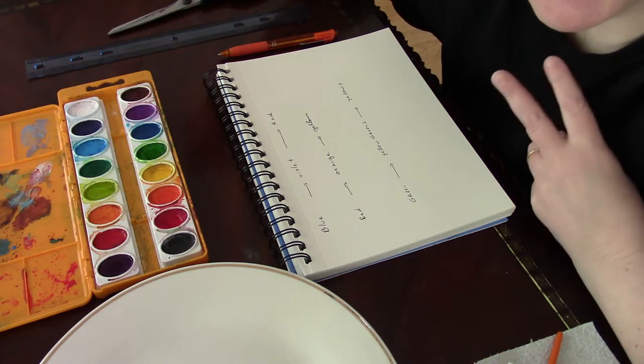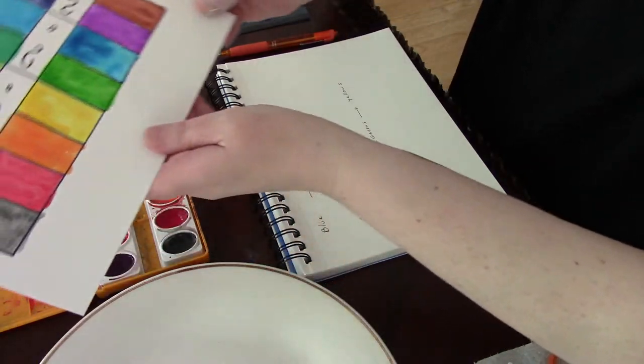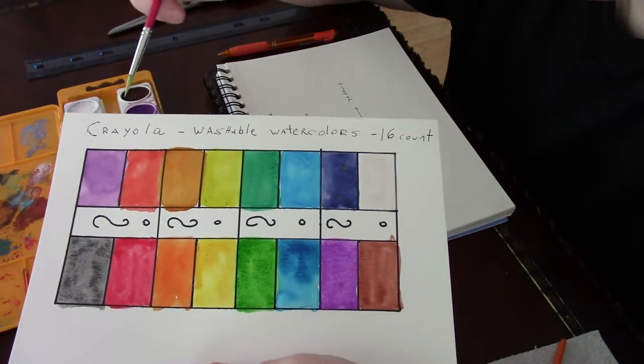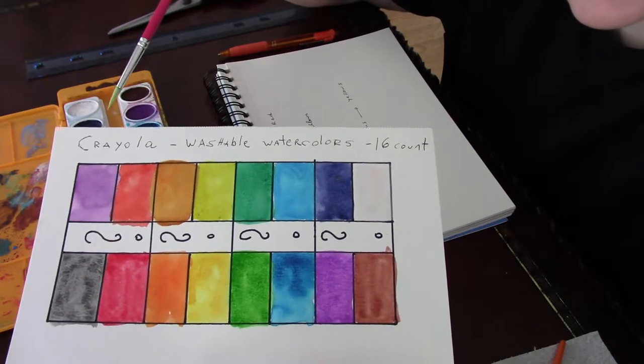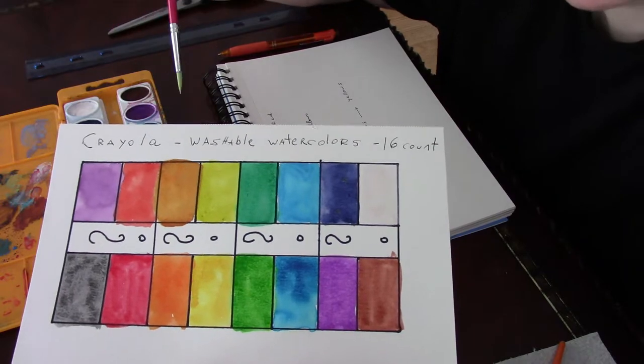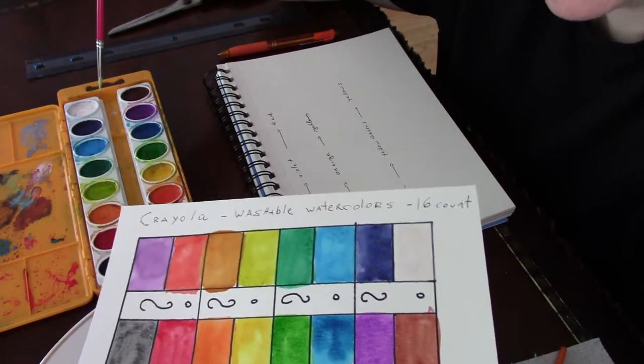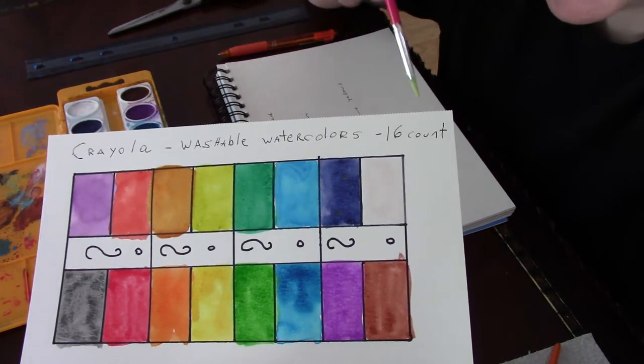In video number two I introduced you to the color chart. Basically, I just took a sample of each of the paints and put them on a piece of paper. I have 16 paints in my Crayola watercolor palette and that's what I did.